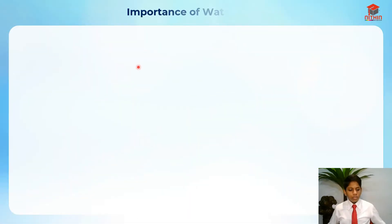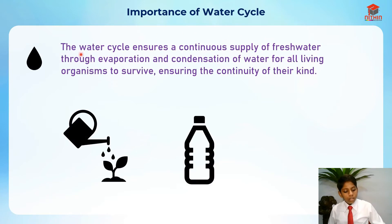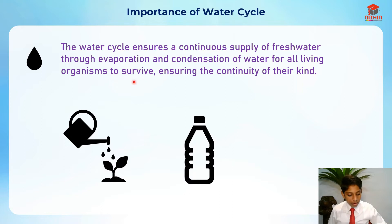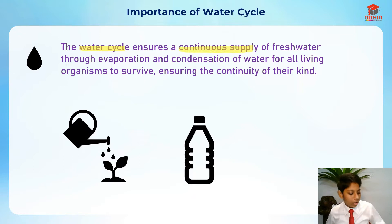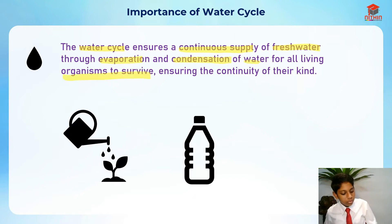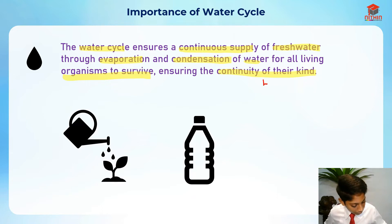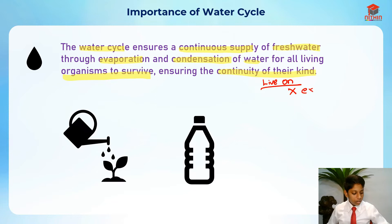What is the importance of the water cycle? The water cycle ensures a continuous supply of fresh water through evaporation and condensation of water for all living organisms to survive, ensuring the continuity of their kind. The water cycle is a cycle, so it always repeats itself — that's why there is the continuous supply of fresh water. This ensures the continuity of their kind, meaning they can live on and not get extinct.